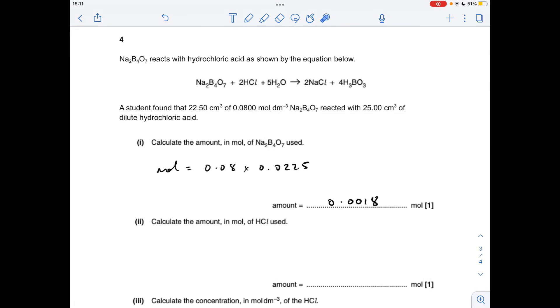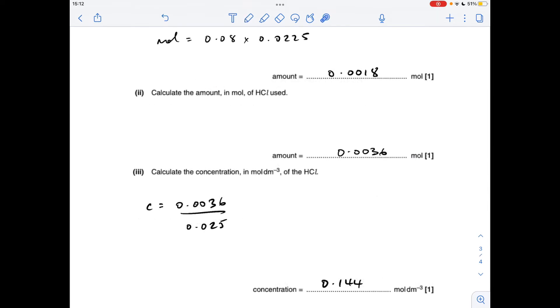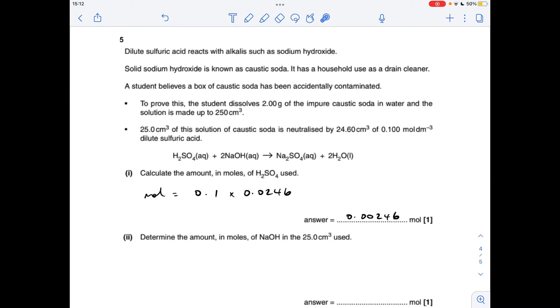Number four: the moles of Na₂B₄O₇ used is concentration times volume in decimeters cubed, so 0.0018. The moles of HCl used is going to be twice as many, so 0.0036. So the concentration of the HCl is moles divided by volume: 0.144 moles per decimeters cubed.